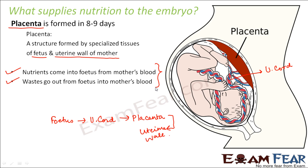All waste products go out from the fetus into the mother's blood, because the fetus will not have specialized systems like the excretory system or digestive system fully developed. Therefore all food comes from the mother's body and all waste products enter the mother's body, where they are then removed through the mother's excretory system.